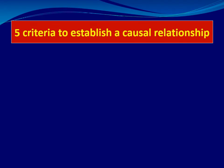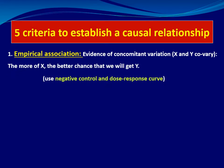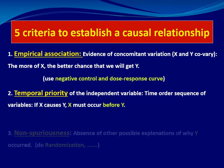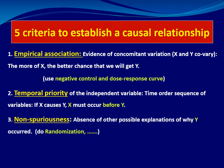There are five criteria to establish a causal relationship. The first three criteria are generally considered as requirements for identifying a causal relationship between X and Y. The first is empirical association, which is the evidence of concomitant variation between X and Y — the more the X, the better chance we will get Y.